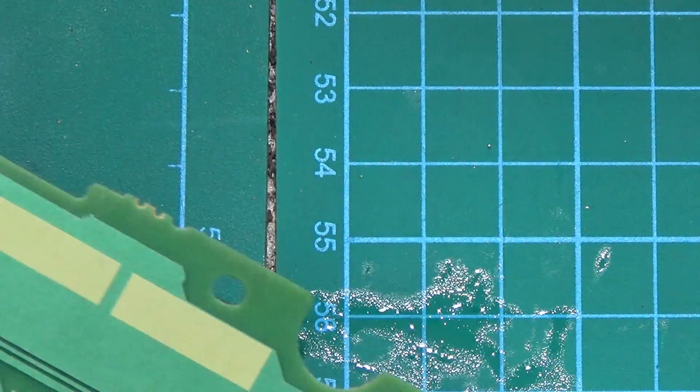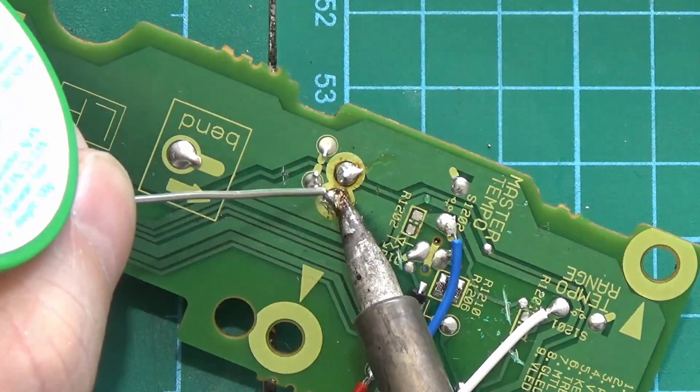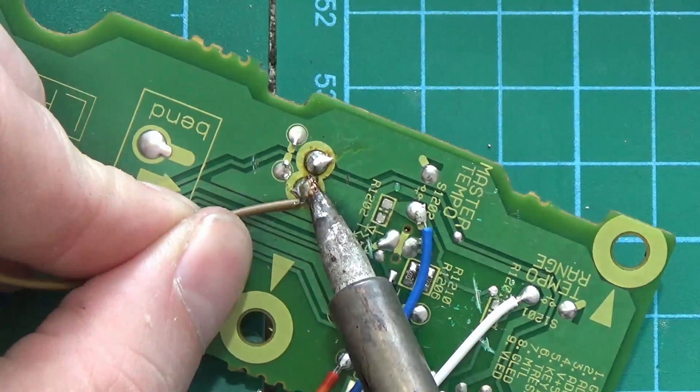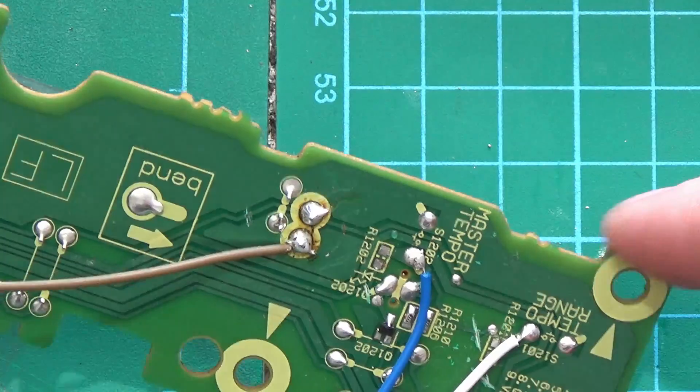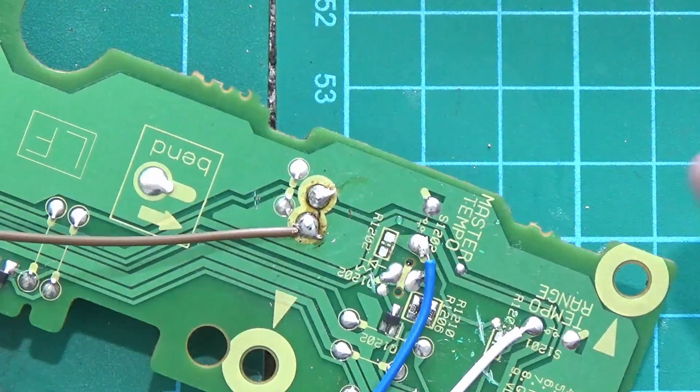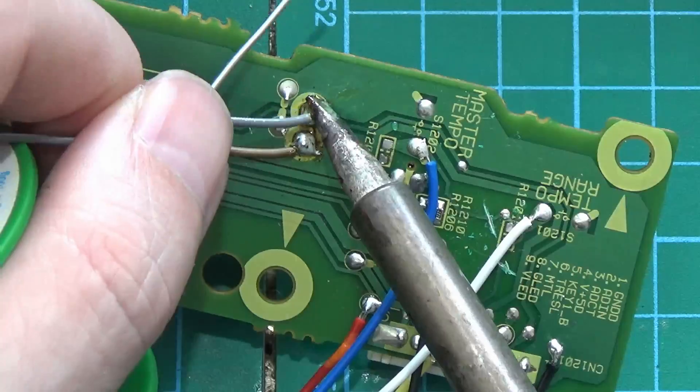Okay, so first we have the plus voltage, so eventually that will be 3.3 volt from the Teensy. In my example I'm just using the 5 volt. Then we have the ground, this will also be the analog ground on the Teensy.